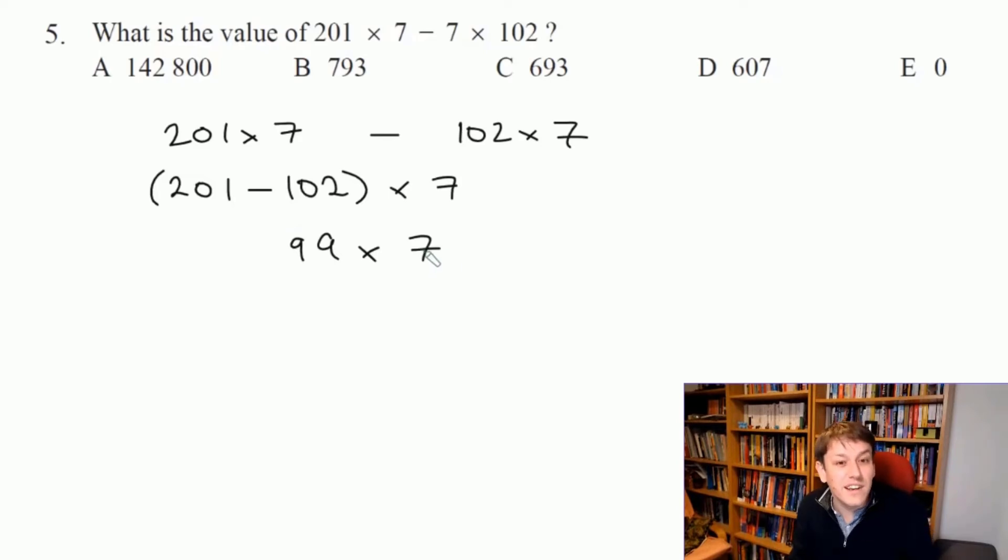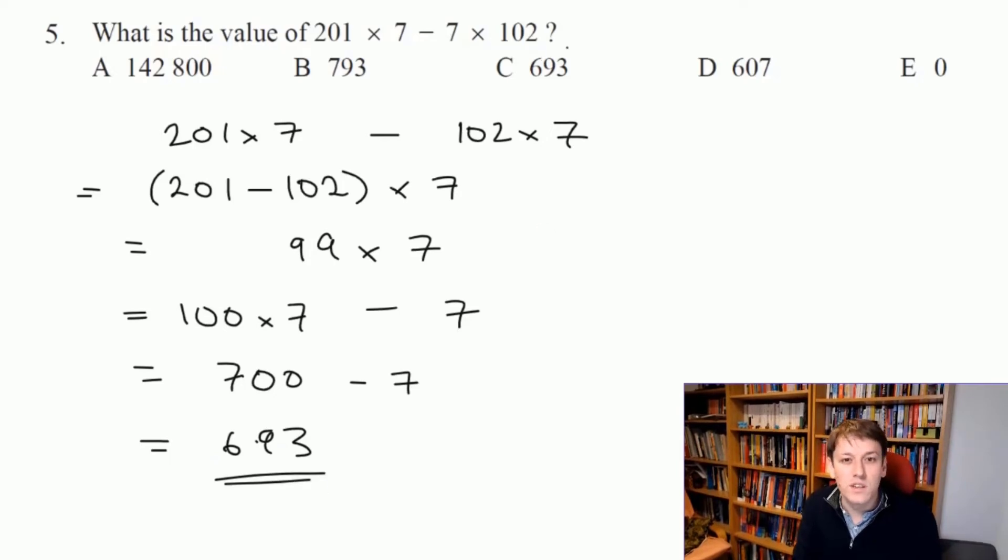Well, 99 lots of 7, that's just 100 lots of 7 minus 1 lot of 7, so you see I can get really quickly here that the answer is 700 minus 7, which is 693. So these sort of calculation tricks just give us a bit more time to do the later questions if we're going for those gold certificates.